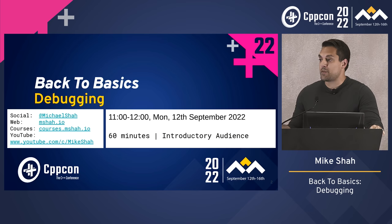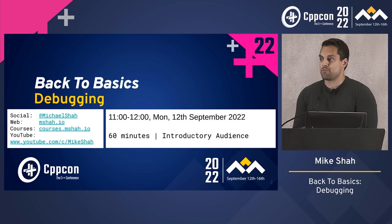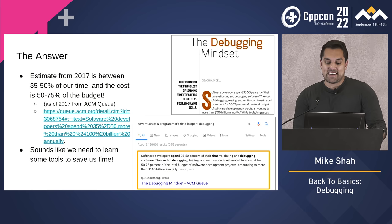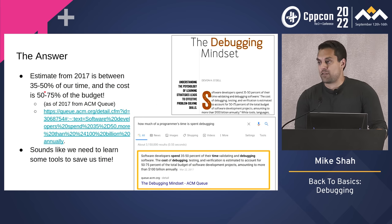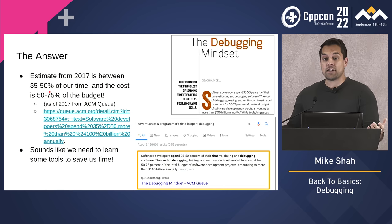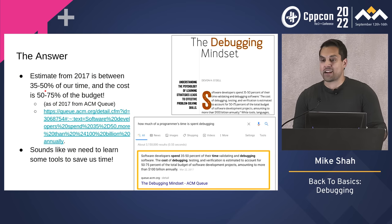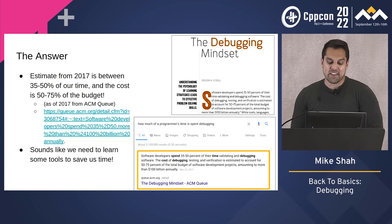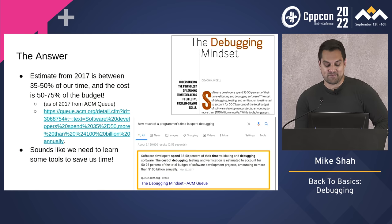For those who don't know, since this is the first day of the conference, the Back to Basics session features introductory-level talks on different topics. Thanks to our chair Klaus Engelberger for the welcome earlier. The answer, from 2017 data — a little bit old — is about 35% to 50% of our time. I've also seen estimates as high as 90%. But I think the more interesting number is the budget: 50% to 75%. The economics of debugging really matter.